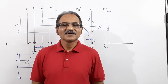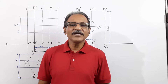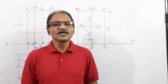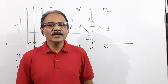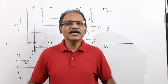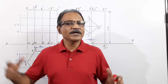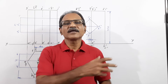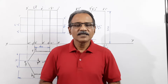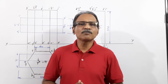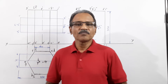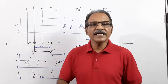In this video on intersection of solids, we are drawing a problem where a hexagonal prism is penetrated by a square prism. The question says that a hexagonal prism of 40 mm side and 100 mm long is standing on its base on HP.